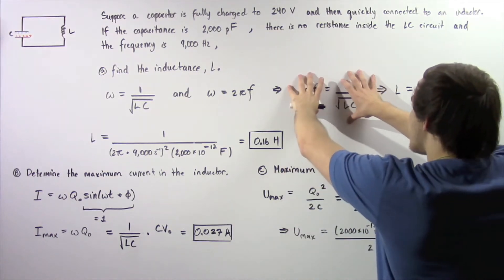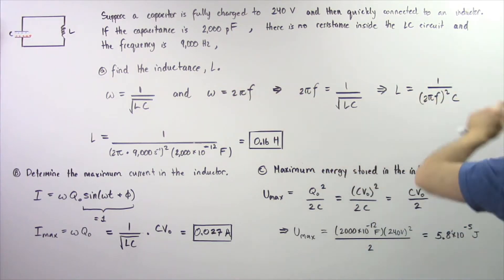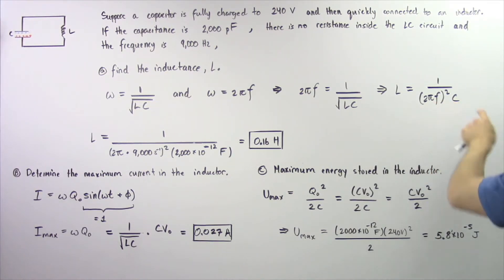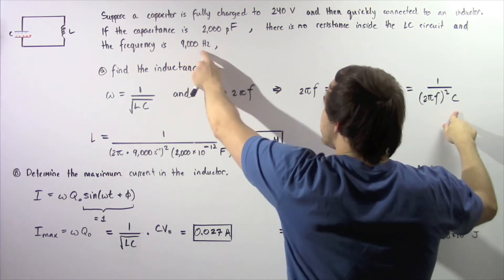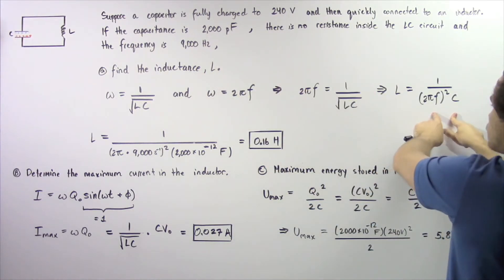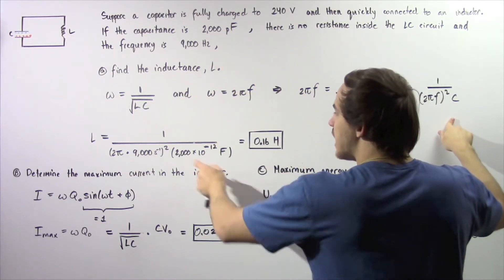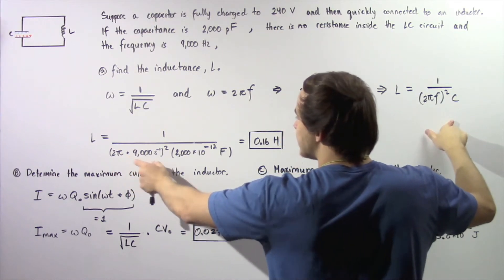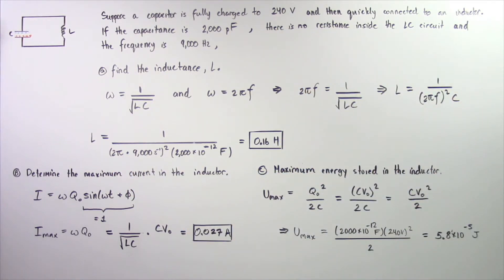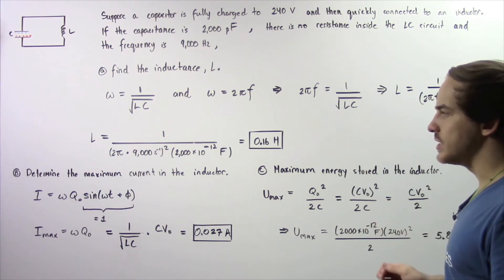If we take the square of both sides and solve for L, we find that inductance L is equal to 1 divided by the square of 2 pi times the frequency, multiplied by the capacitance. We know the capacitance is 2000 picofarads and the frequency is 9000 hertz. We convert picofarads to farads: 2000 times 10 to the negative 12 farads. Multiplying by the square of 2 pi times 9000, we get an inductance of about 0.16 henrys.